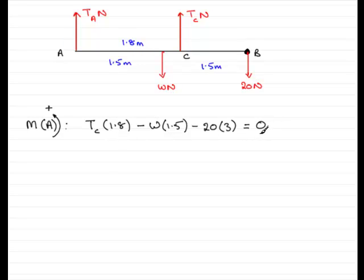So what I need to do now is just rearrange this to make T_C the subject. I think what I'll do though is we'll just tidy this up as well. So we've got 1.8 T_C, and if I take these two terms to the other side by adding them to both sides, we will get that this equals 1.5W plus 20 times 3, which is 60. Now, if I divide by 1.8 to both sides, I've got T_C equals 1.5W over 1.8, and I've also got 60 divided by 1.8.